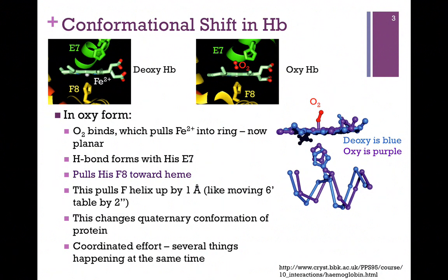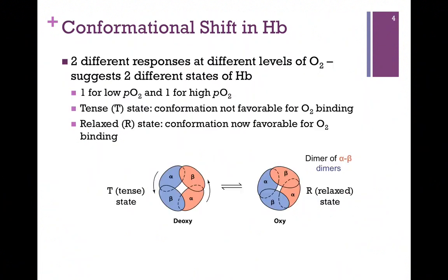Several things are happening at the same time: oxygen binds, the iron is pulled into the heme ring, and the F8 helix is brought up. Now let's see how that relates to a quaternary change. Remember, in our binding curve for hemoglobin we saw that there were two different states — a low affinity state and a high affinity state.